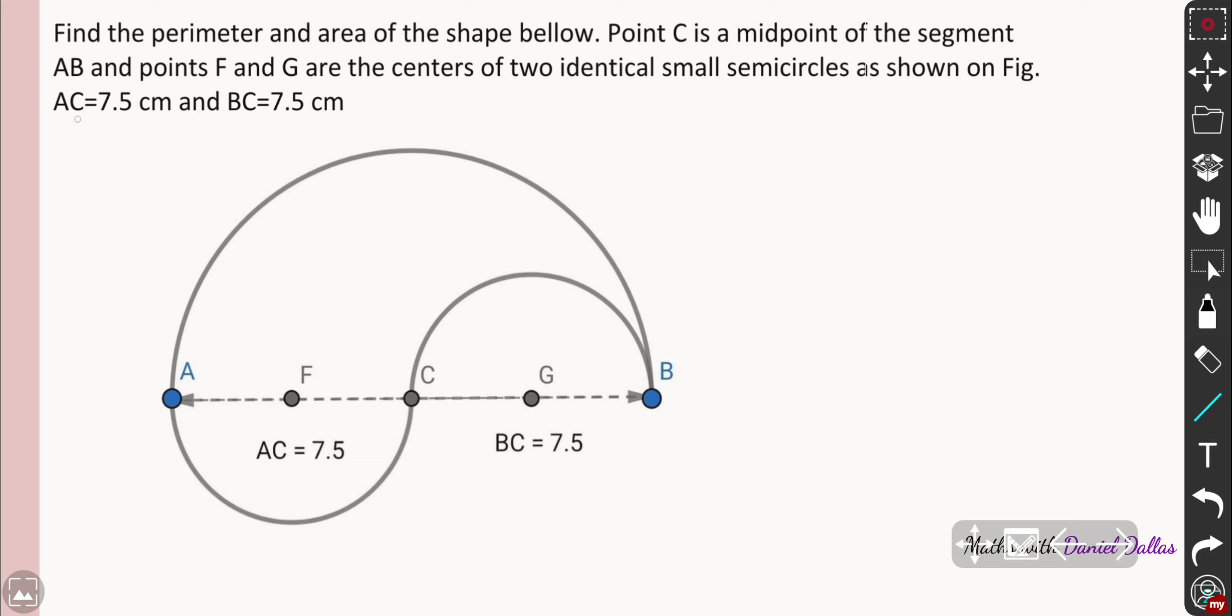So AC is 7.5 right there and BC is 7.5 as well. So you need to find the perimeter and the area of this shape. Alright, so grab a pen, grab the paper and try to solve by your own and then compare with my explanation.